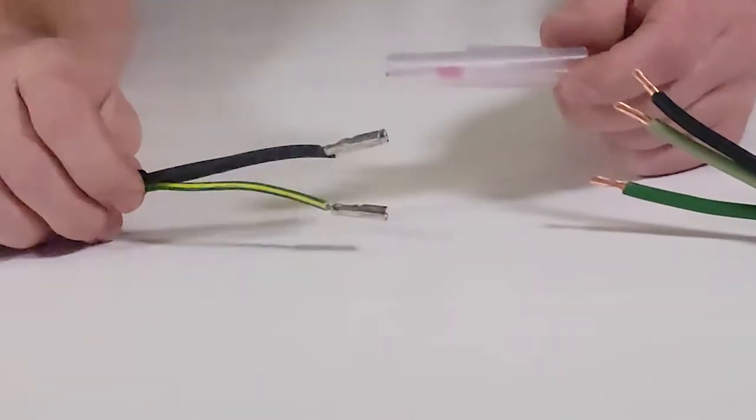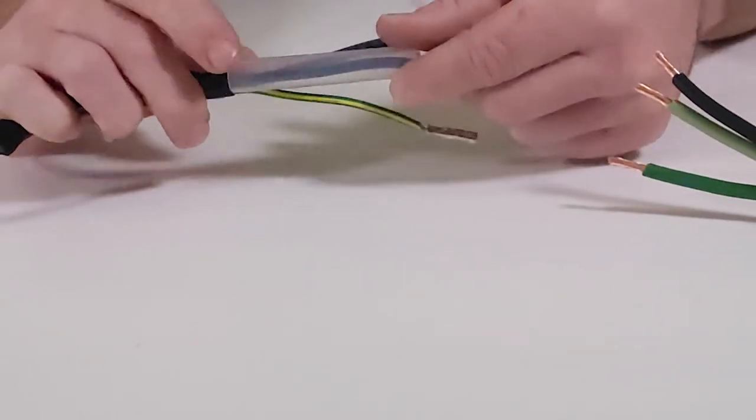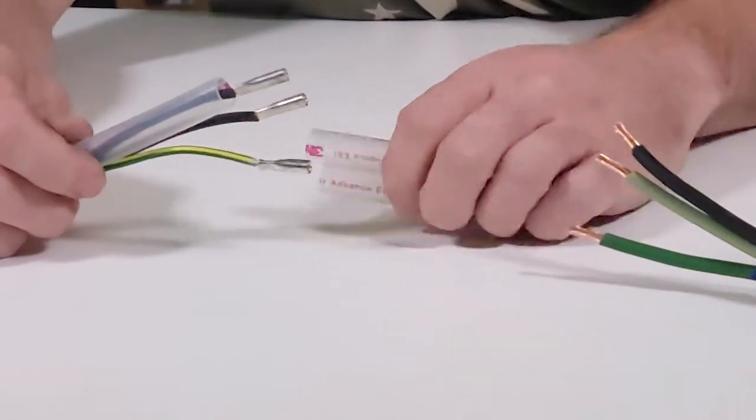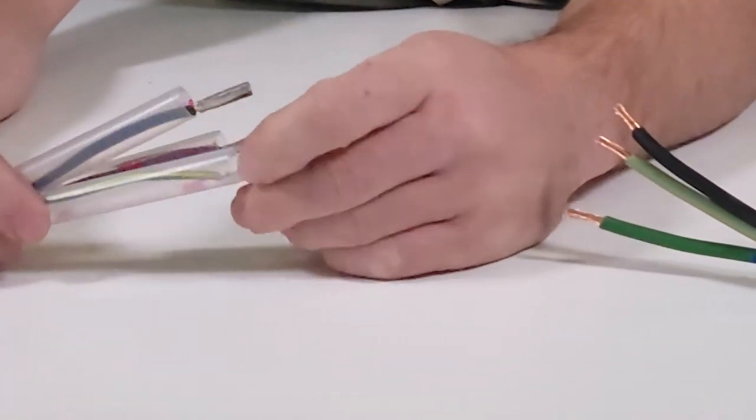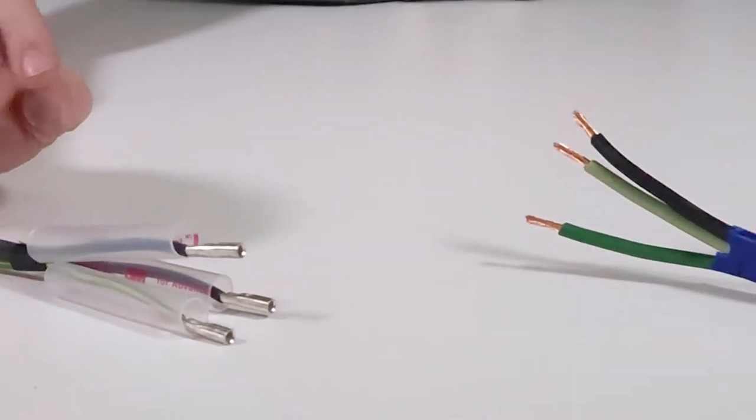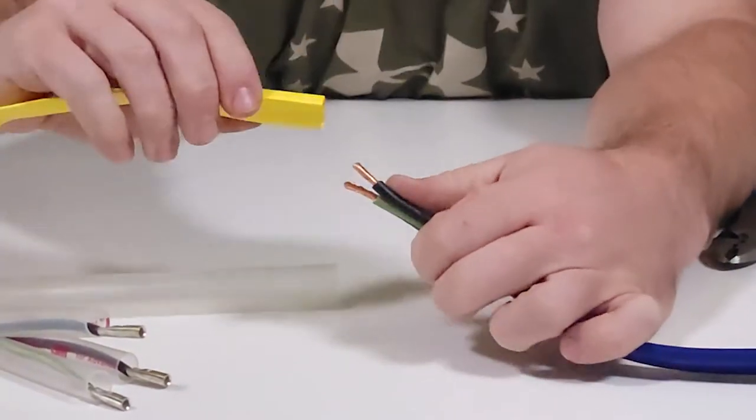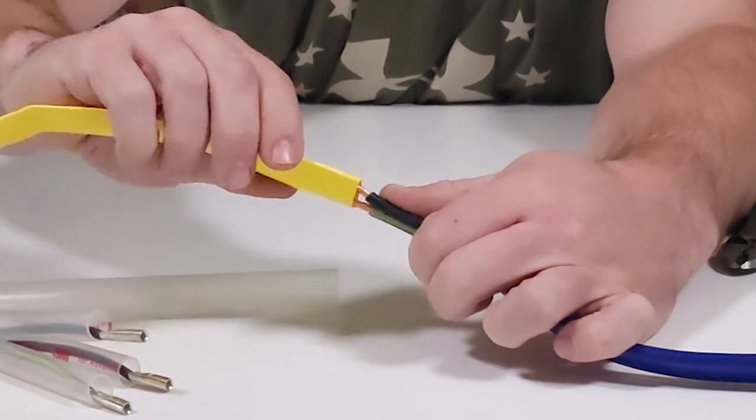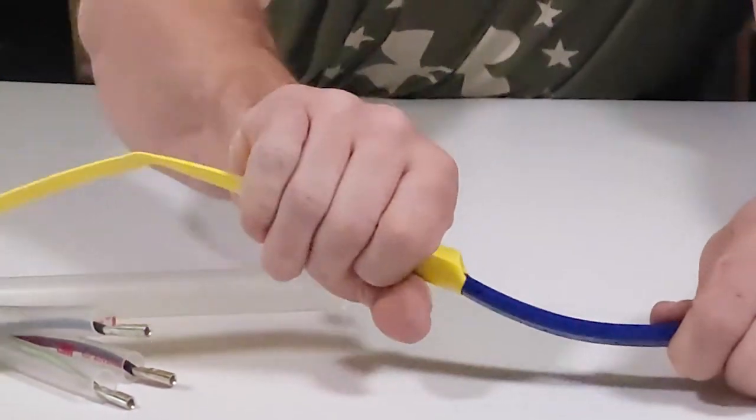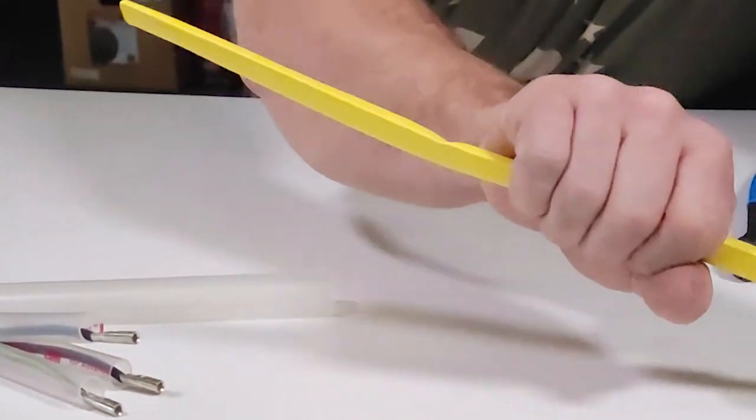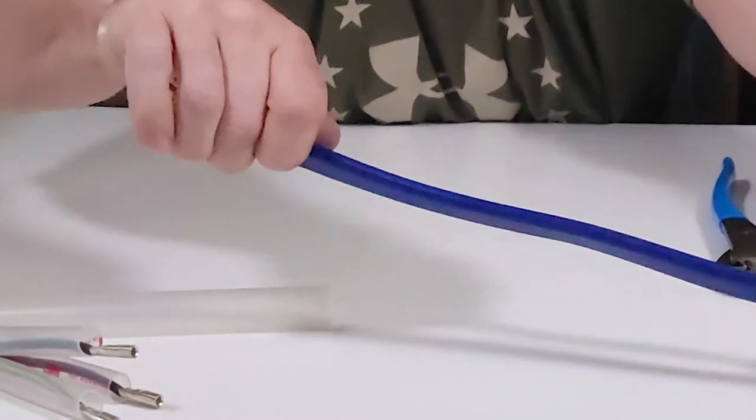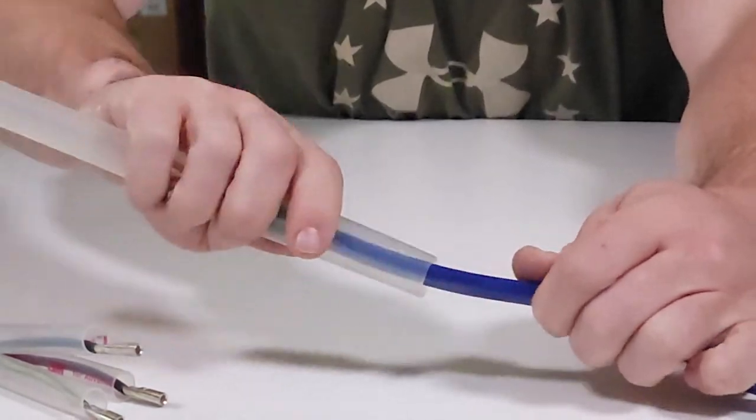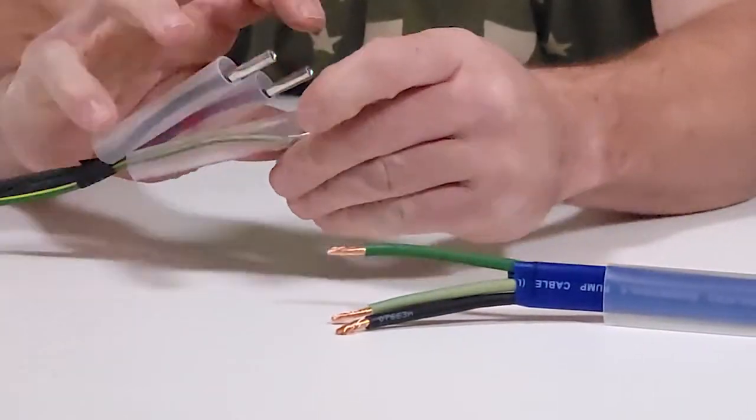Once all three splices have been attached to the three motor wires, slide a small clear heat shrink over each wire and temporarily pull them away from the splice. On the new cable, slide the large yellow shrink tube on first, then the large clear shrink tube second, and push back along the cable far enough to keep it from coming in contact with the heat gun in the next steps.